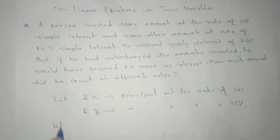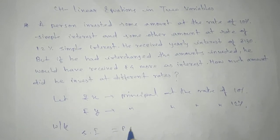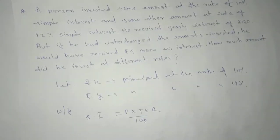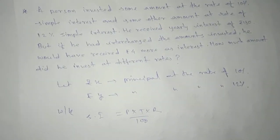We know the simple interest formula: SI = P × T × R / 100. We'll apply this. According to the question, let's see the first case.